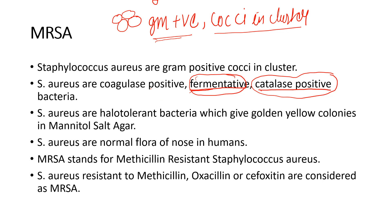In order to separate Staphylococcus aureus from the rest of its species — such as Staphylococcus saprophyticus and Staphylococcus epidermidis — we have to do the coagulase test. Staphylococcus aureus is the only coagulase-positive bacterium in the Staphylococcus group, so after doing the coagulase test, it is confirmed as Staphylococcus aureus.